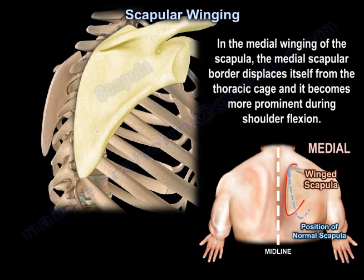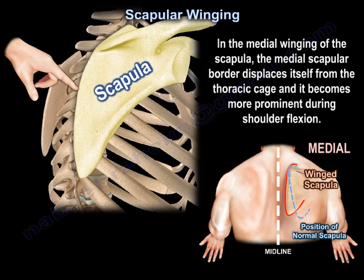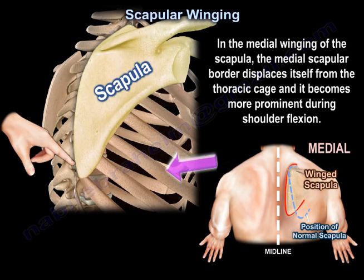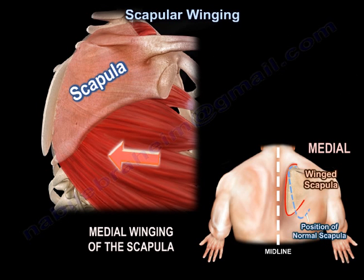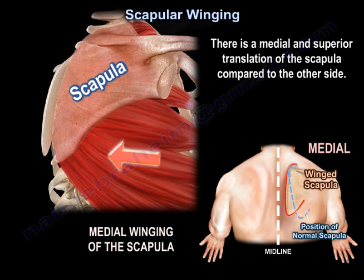In medial winging of the scapula, the medial scapular border displaces itself from the thoracic cage and becomes more prominent during shoulder flexion. There is a medial and superior translation of the scapula compared to the other side.